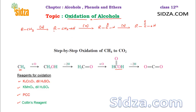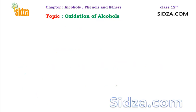Today we are going to discuss the oxidation of alcohols — how we oxidize them and what products we get. PCC stands for pyridinium chlorochromate. We have primary, secondary, and tertiary alcohols, so let's start with primary alcohols.